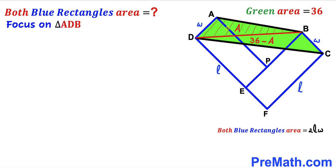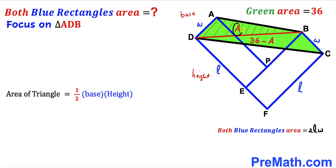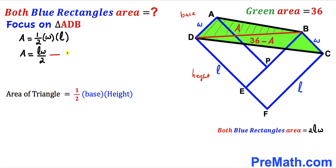Let's calculate the area of triangle ADB using the formula: area equals one-half times base times height. The base of this triangle is W and the side DE is the height, which is L. So the area A equals one-half times W times L, which simplifies to LW divided by 2. I'll label this as equation number 1.